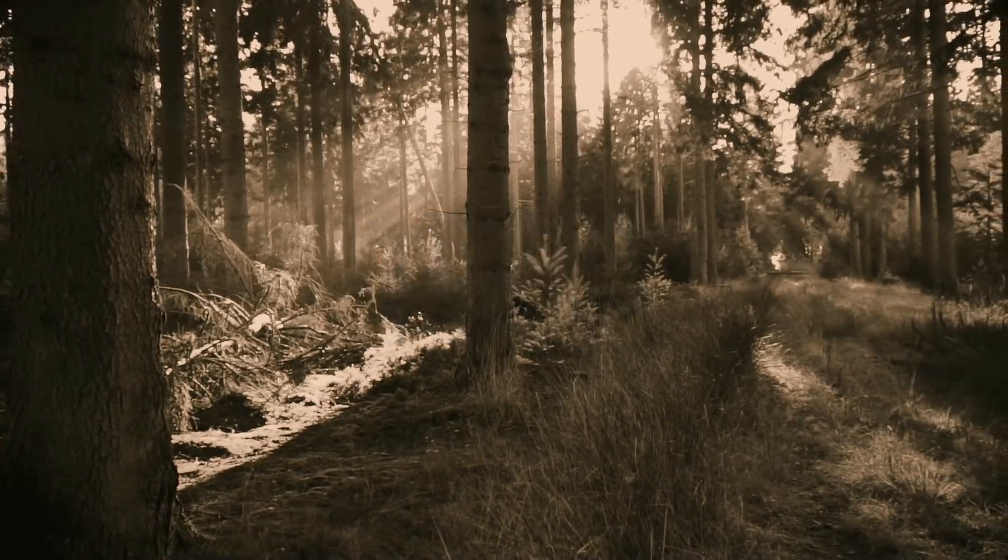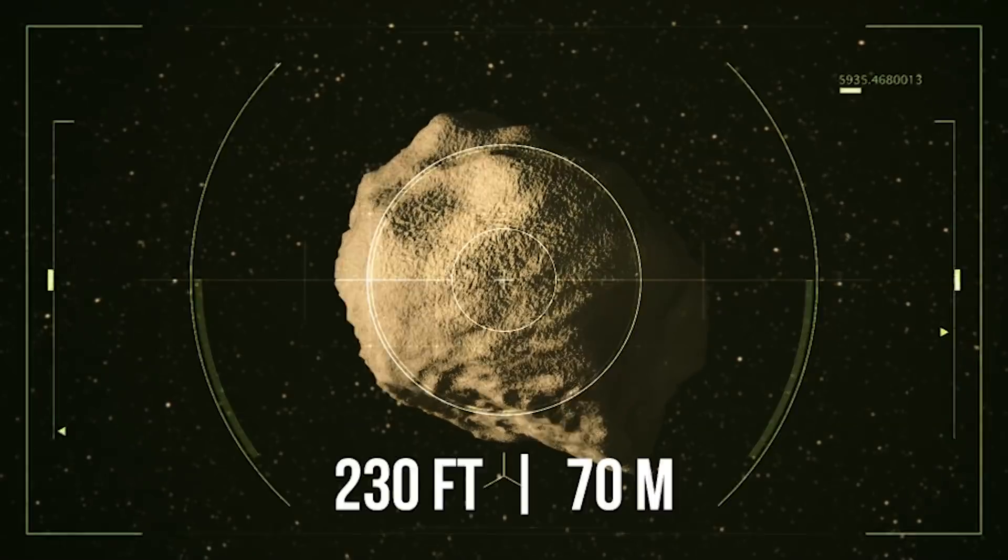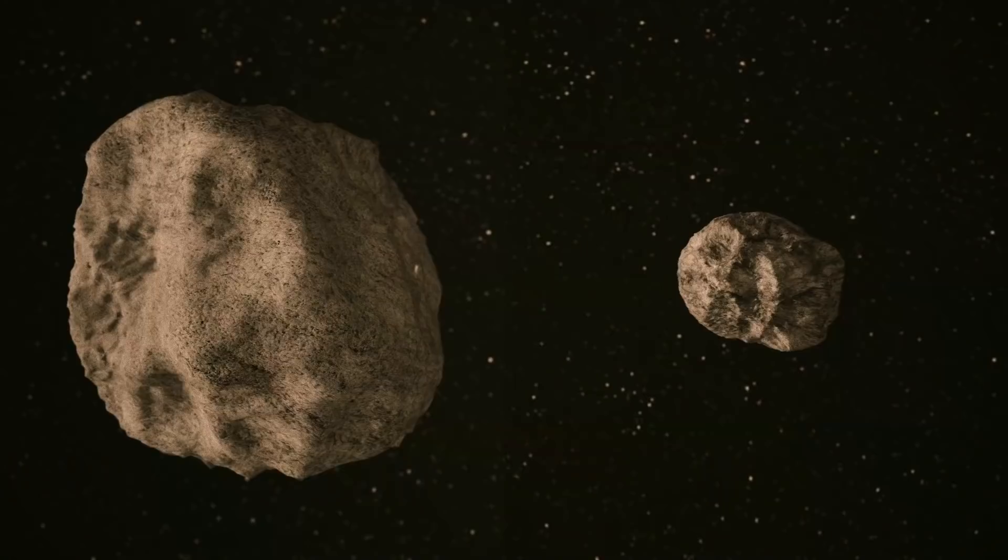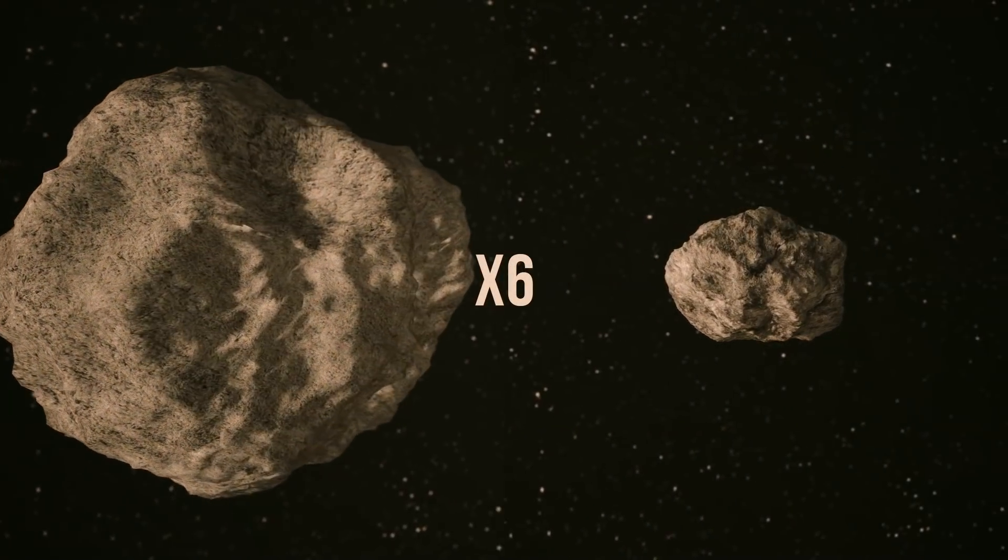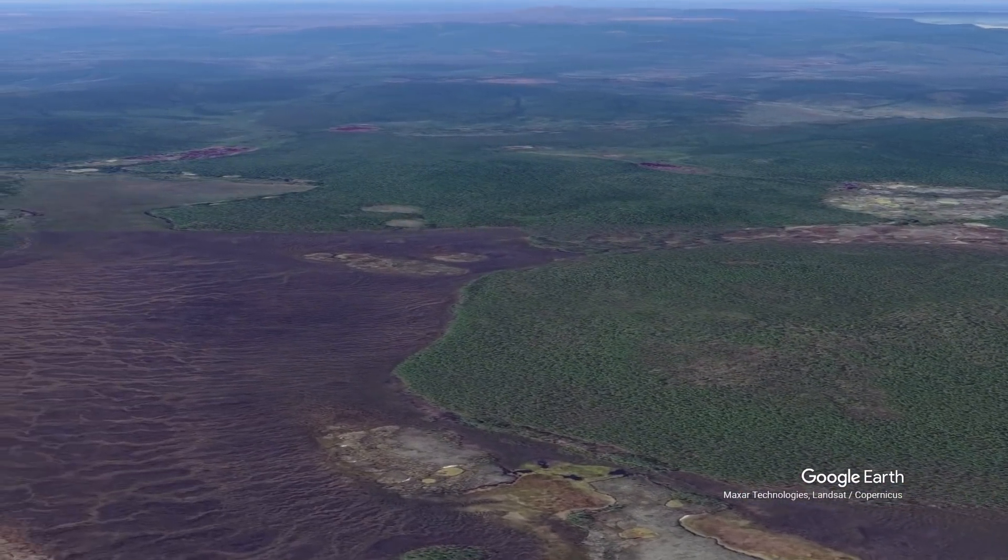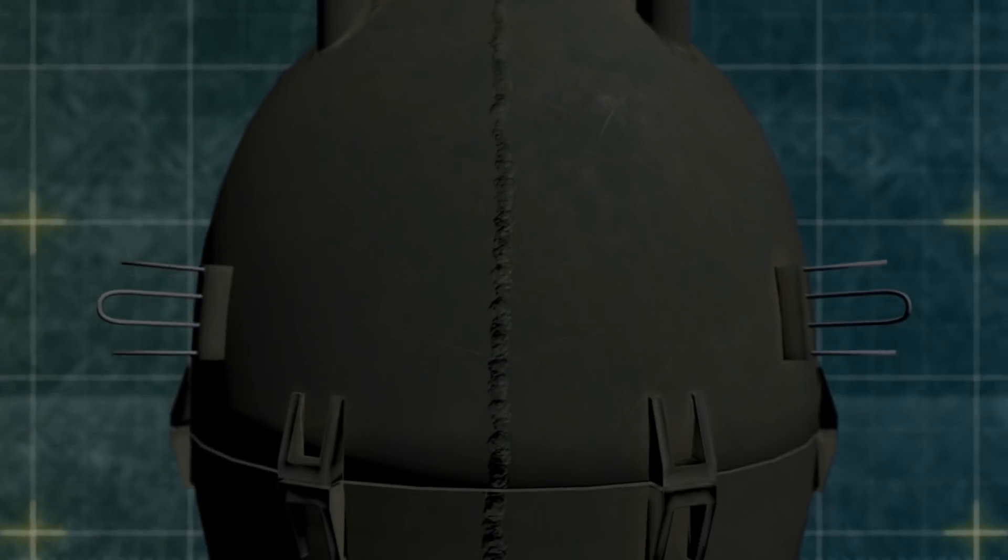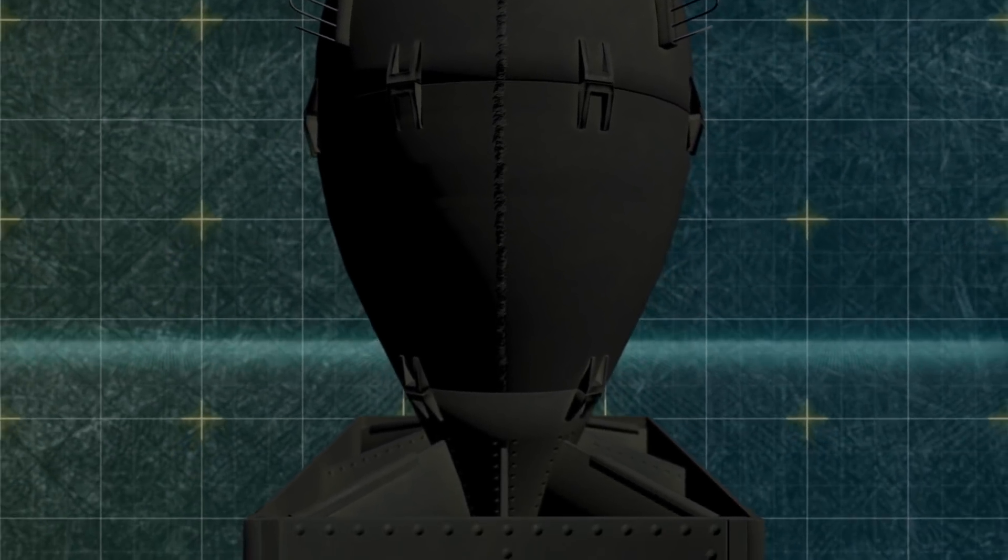In 1908, the explosion of the Tunguska meteorite, with a diameter of about 230 feet, knocked down taiga trees across an area of 800 square miles, and it was six times lighter than the asteroid Apophis. At the same time, the Tunguska meteorite didn't leave a crater, which means that it didn't even crash into the Earth's surface, but exploded at an altitude of six to seven miles. Nevertheless, the power of that explosion is estimated to be more than 20 megatons in TNT equivalent, which is comparable to the most powerful modern thermonuclear bombs.